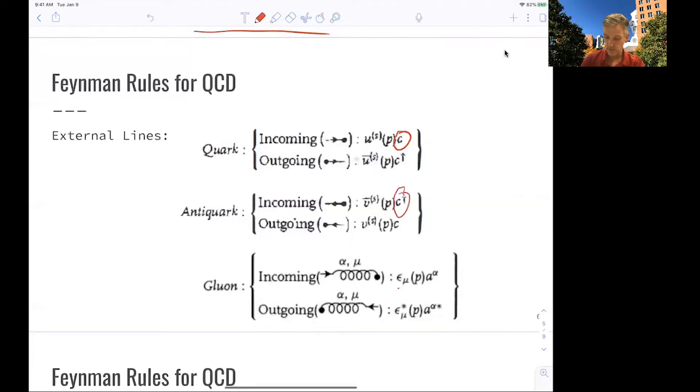For the gluon now, we have to keep track of the polarization of the gluon, and also of the color. And those are the vectors I just introduced on the previous slide.